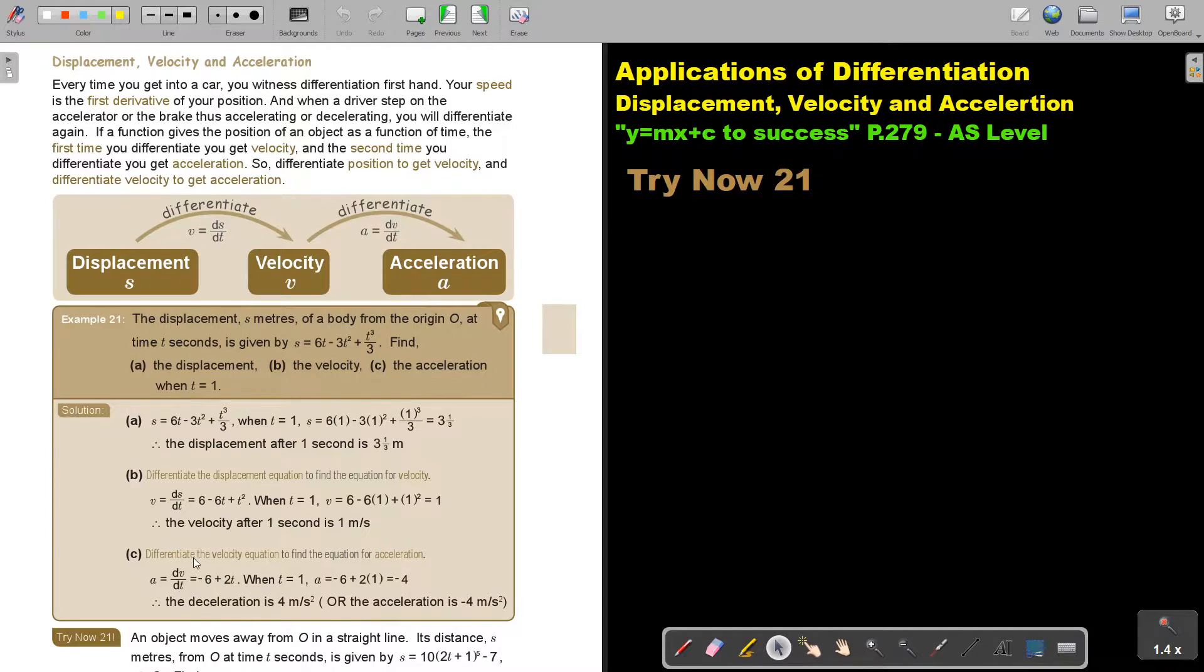And then acceleration, I differentiate the velocity equation to get the acceleration. So this is what I did there. So the constant just becomes 0, that's negative 6 and that's 2t. And then I substitute 1 and I get negative 4. So the deceleration is 4 meters per second squared, or the acceleration is negative 4 meters per second squared. So if you say deceleration, you don't have to write the negative. If you don't say anything, write the negative or say acceleration is negative, indicating that it's actually deceleration.